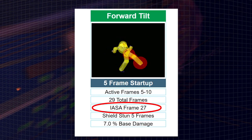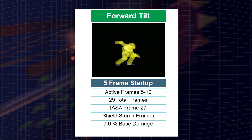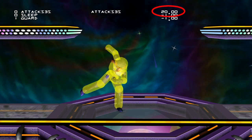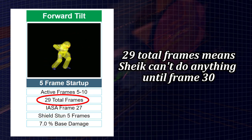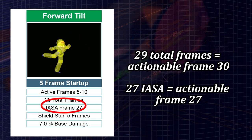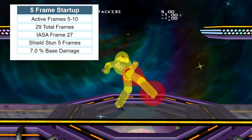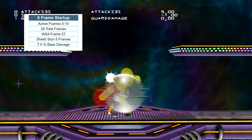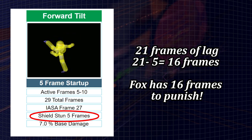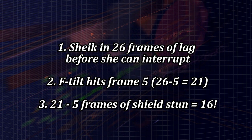Sheik's f-tilt is interruptible on frame 27, so we'll use that number to calculate how much lag Sheik will be in after the attack, rather than the 29 total frames. If Sheik can interrupt the f-tilt on frame 27, that means she's actionable on frame 27, meaning the last frame of lag was on frame 26. We know the first active frame of f-tilt comes out on frame 5. If we assume f-tilt hits Fox's shield on that frame, Sheik will not be actionable until frame 27 — that's 21 frames of lag after the move connects. We subtract the 5 frames of shield stun advantage, leaving Fox with 16 frames to punish.